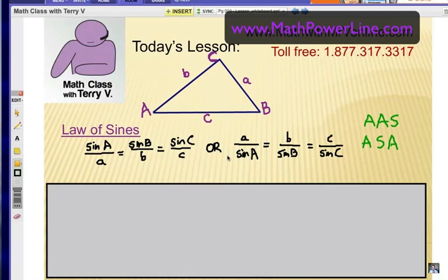When do we use the Law of Sines? When we're given two angles and a non-included side, known as AAS, or if we're given two angles and an included side, known as ASA. We have to figure out which parts are labeled. Let's try some examples.